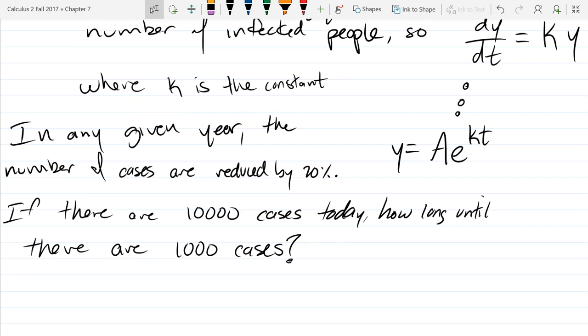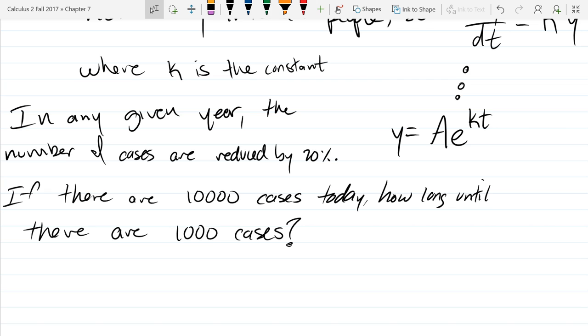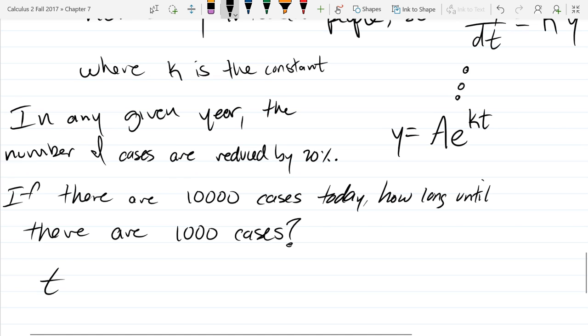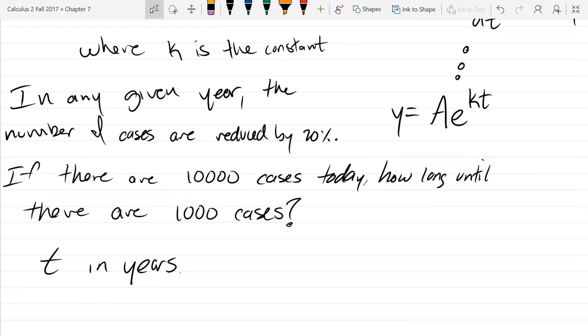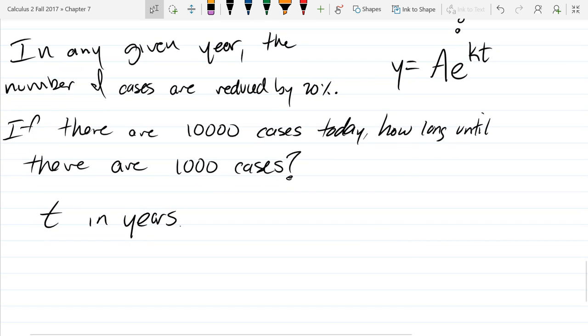All right, so each year the number of cases are reduced by 20 percent, and if there are 10,000 today, how long until there are 1,000 cases? I have not actually said what units of time we're going to measure in. Given this information, what unit of time should I use? Probably years. It makes sense to use years because the only information we got is in years. So t is in years. Now it was a choice we made—I could have gone months, but then we would have had to convert a little bit. It would have been every 12 months we would reduce by 20 percent instead of every year. So t is in years. How in the world can I use this 20 percent reduction right here?